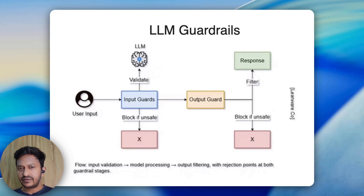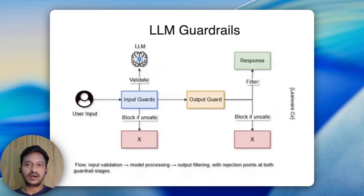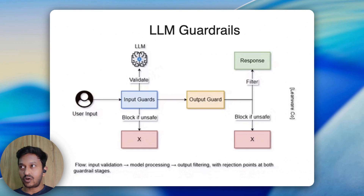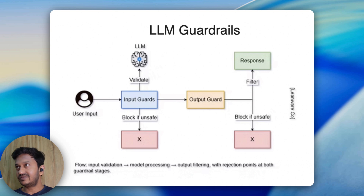Hey everyone, welcome back to the channel. Today we are going to build something critical that every AI, RAG, and agentic AI application basically needs — LLM guardrails. Somehow every time we ignore LLM guardrails while building AI applications, we always think the LLMs we are using are always safe and produce the best, contextually relevant output. But that's not the truth. LLMs basically hallucinate, and we need to have these policies and guardrails in place while building efficient AI applications.